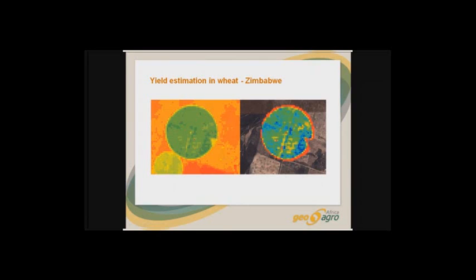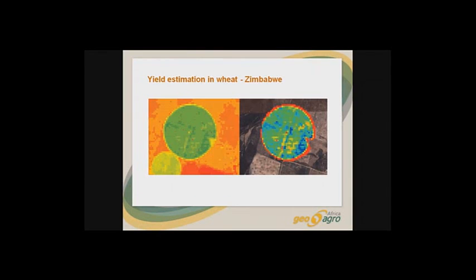Another application is yield estimation. Wheat, corn, sunflowers, and rice are crops that have a very close correlation in yields.